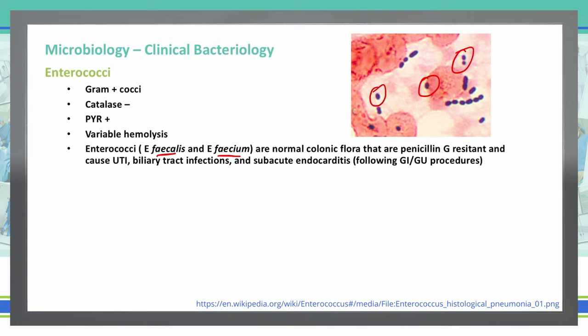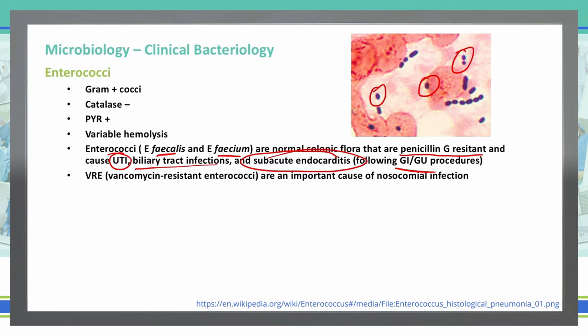Specifically, Enterococci are penicillin G resistant. They do cause UTIs, biliary tract infections, and subacute endocarditis. Most of the time, the subacute endocarditis presents itself after a GI or GU procedure. You've probably often heard of VRE, or vancomycin-resistant Enterococci — these are Enterococci species that are resistant to the killing effects of vancomycin.